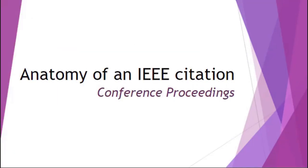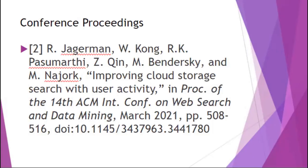There are more types of sources than just journal articles, so let's go through a few of the more popular types used in engineering and computer science. Let's look at the anatomy of an IEEE citation for a conference proceeding. You include the footnote along with the author, and make sure the title of the conference proceeding is in quotes. After the title, you put 'in' followed by the title of the conference — in this case, the Proceedings of the 14th ACM International Conference on Web Search and Data Mining. Then you put a comma, the month and year, the page numbers, and this one also includes a DOI — a digital object identifier — which is a permanent web address where you can find the conference paper.